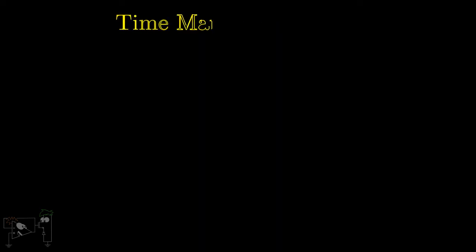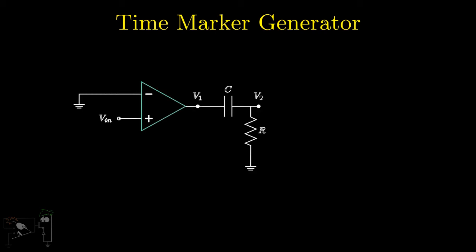The op-amp comparator can also be used to build a time marker generator. That is, a circuit which outputs pulses with the same frequency as that of the input signal. Here, the output of the zero-crossing detector is first differentiated by an RC circuit.